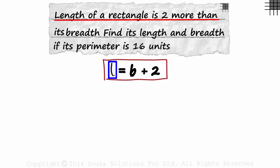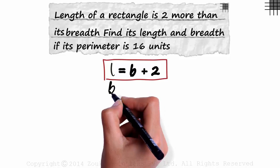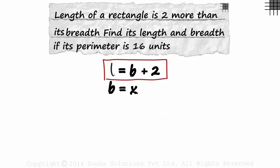The length of the rectangle is two more than its breadth. We don't really need two variables here. Let's say the breadth is equal to X units. Putting X in place of B here gives us L as X plus 2. Now that we have established a relation between the length and breadth, let's move on to the second point.